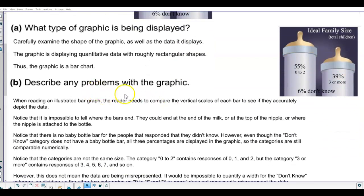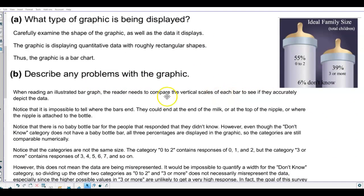For Part B, it says describe any problems with the graphic. Now when reading an illustrated bar graph, the reader needs to compare the vertical scales of each bar to see if they accurately depict the data. Notice that it is impossible to tell where the bars end. They could end at the end of the milk, or the top of the nipple, or where the nipple is attached to the bottle.